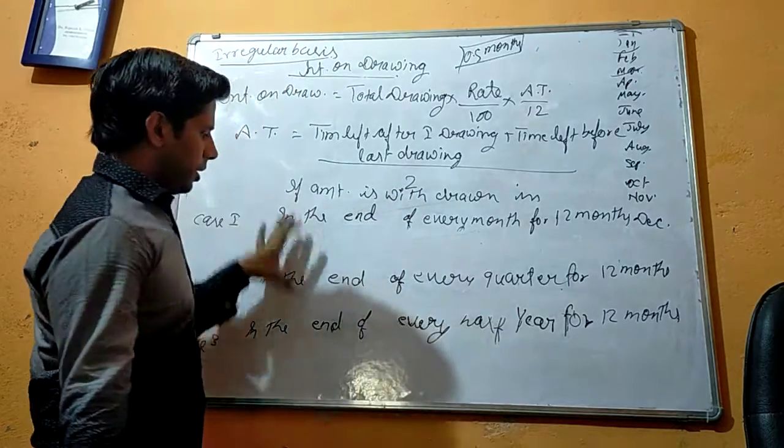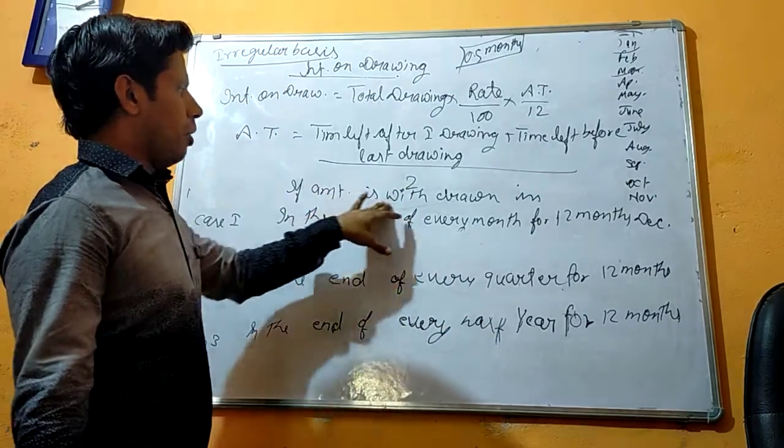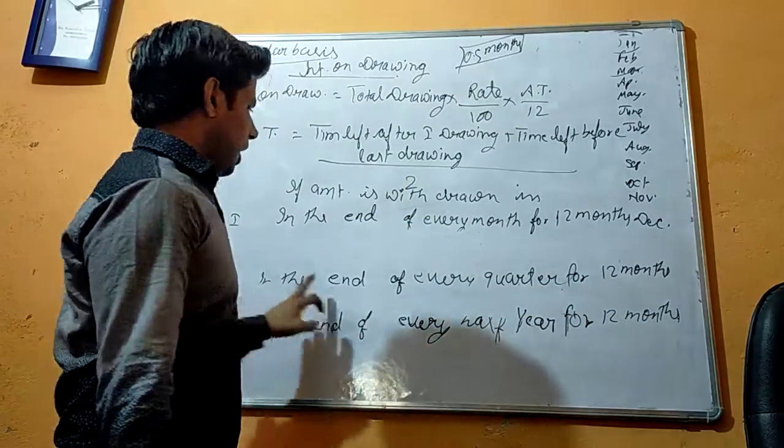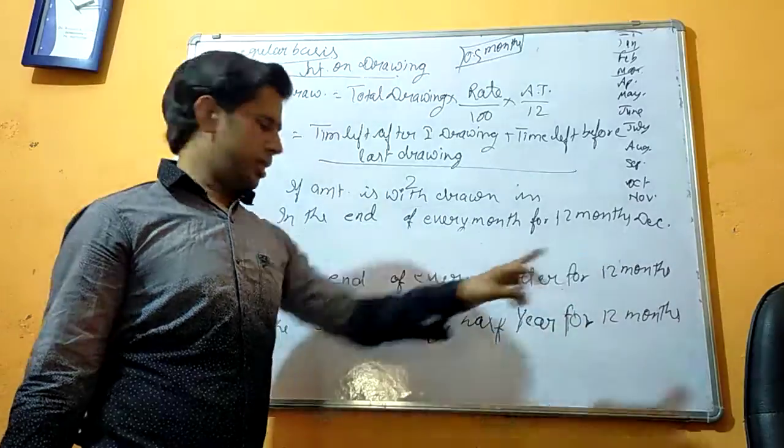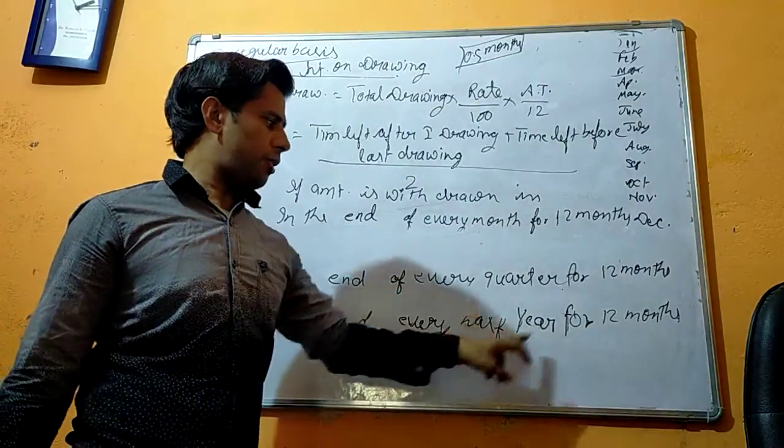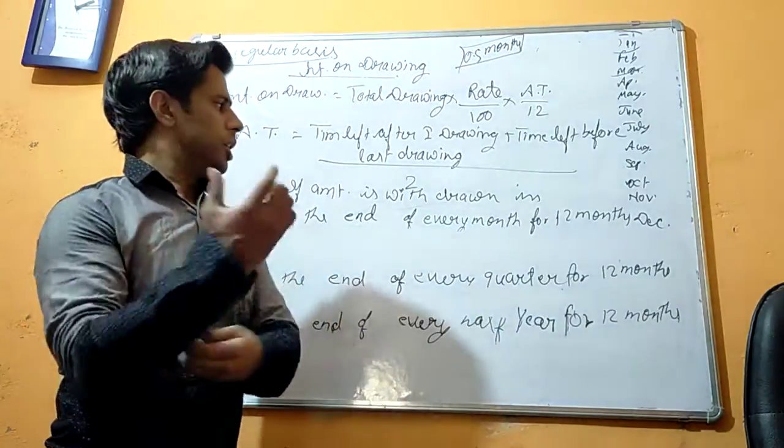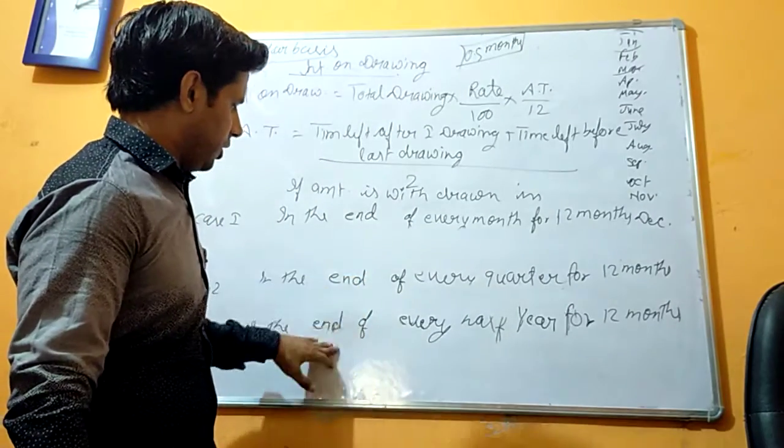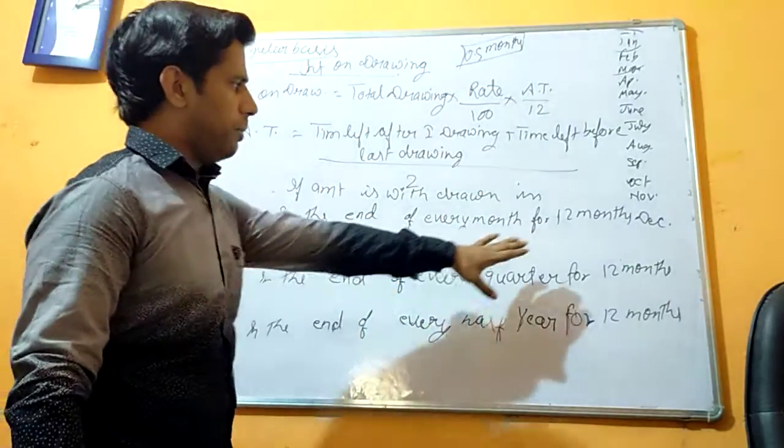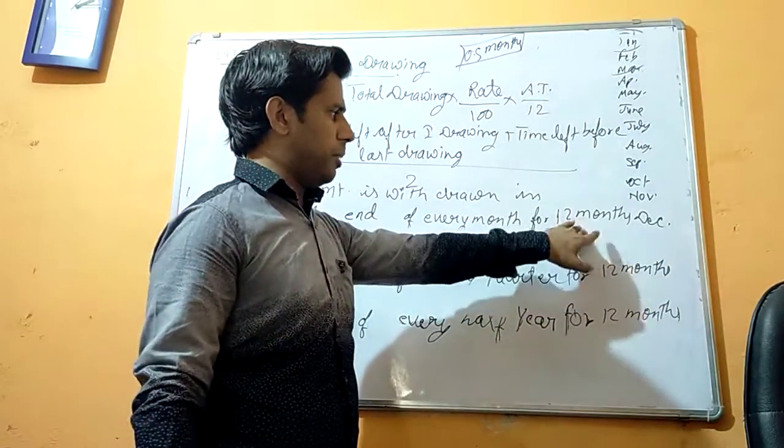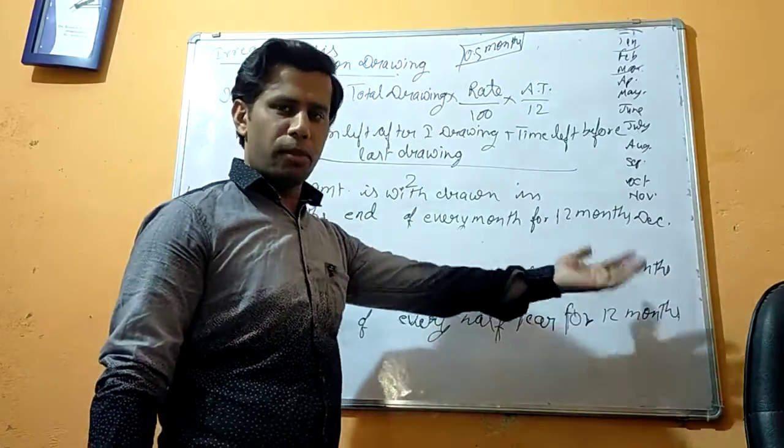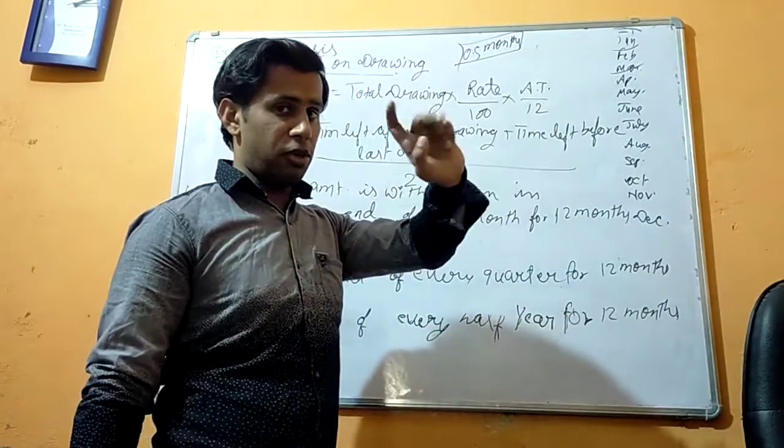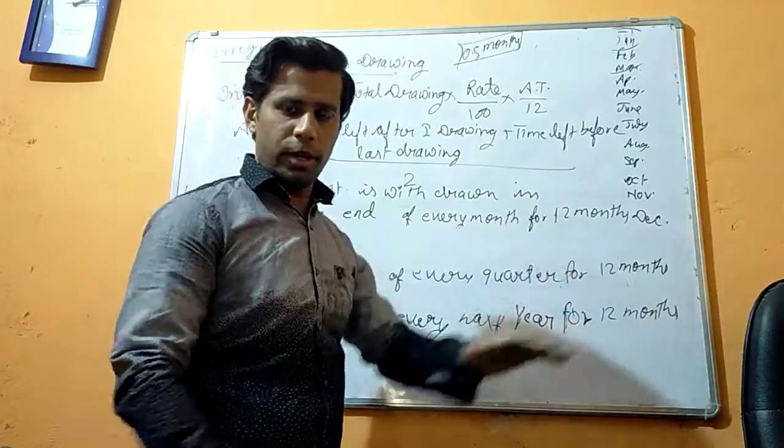Now there are three new cases. If the amount is withdrawn at the end of every month for 12 months, at the end of every quarter for 12 months, at the end of every half year for 12 months. Here only the 'end' word will be changed. Sometimes the period will also be changed - 9 months, 6 months. Same formula, but instead of 12 you will take different months.